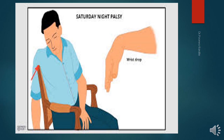This slide is of Saturday night palsy. When a person sits for a prolonged period in an armchair, it compresses the radial nerve in the axilla. Similarly, prolonged use of crutches leads to crutch paralysis. In both conditions, the radial nerve is injured at the axilla.